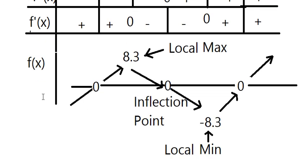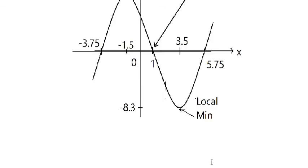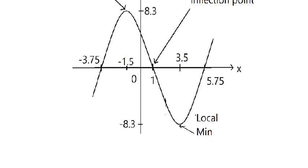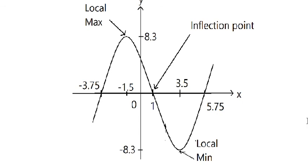Now we have the full variation table. After obtaining the function f, we can draw its graph. We have the local maximum at about 8.75, and the local minimum at about minus 8.75. The inflection point is at x equals 1 with value 0, because they are symmetric in the curve. That's the end — thank you for watching.